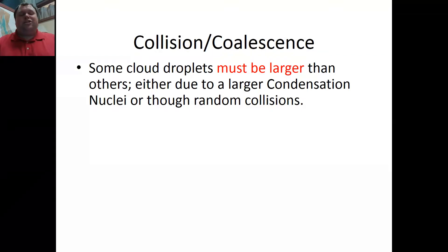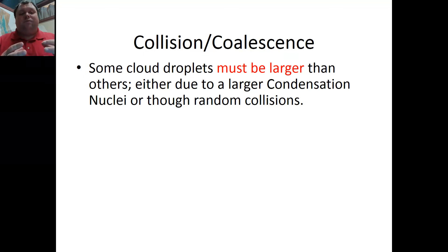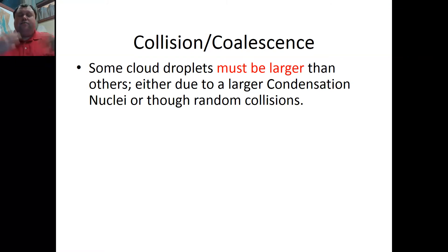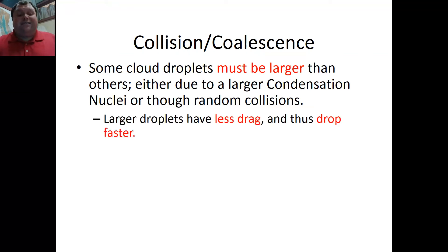Let's talk about collision and coalescence first. Not all cloud droplets are alike — some are bigger, some are smaller. This could be due to random collisions, different condensation nuclei, and so on. What you end up with is cloud droplets of different sizes. Now, large droplets fall faster than small droplets. Most people think it's because the large droplets are heavier — and to disprove that, I have two things here.